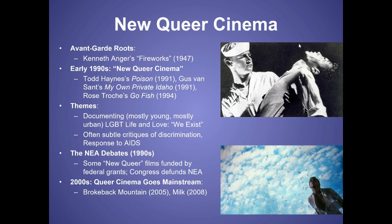That also includes queer cinema. Queer cinema goes all the way back to the 40s and the avant-garde art movement with movies like Fireworks. In the 90s there was an emergence of what's called New Queer Cinema. The themes of queer cinema include documenting LGBT life and love, asserting 'we exist, we're here,' and offering subtle critiques of discrimination. It was often a response to the AIDS crisis — it's no mistake there was almost a golden age of queer cinema in the 90s, because many gay people felt the government didn't care about them, driving them to find voices in art and other forums.